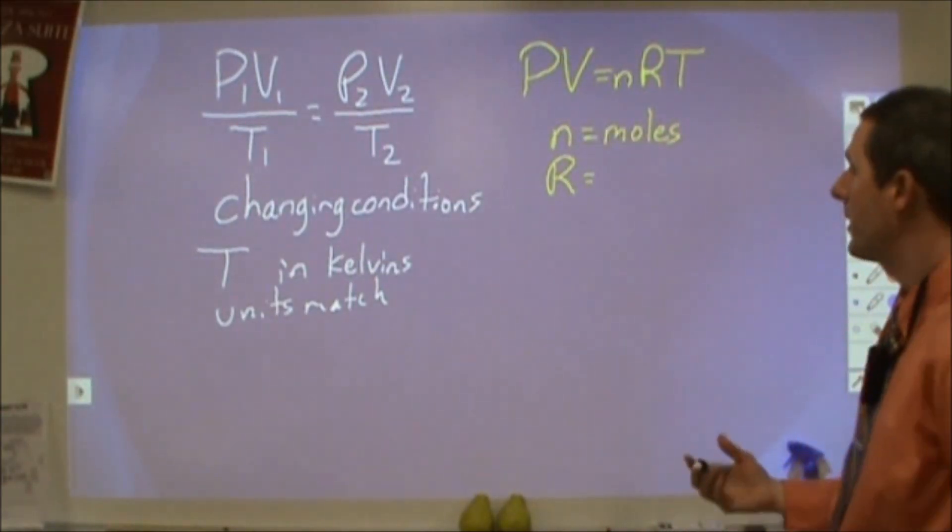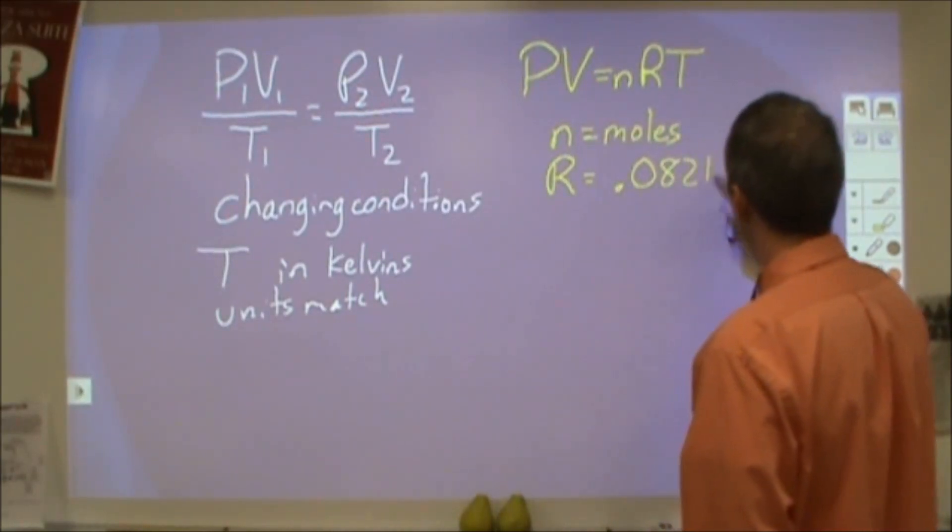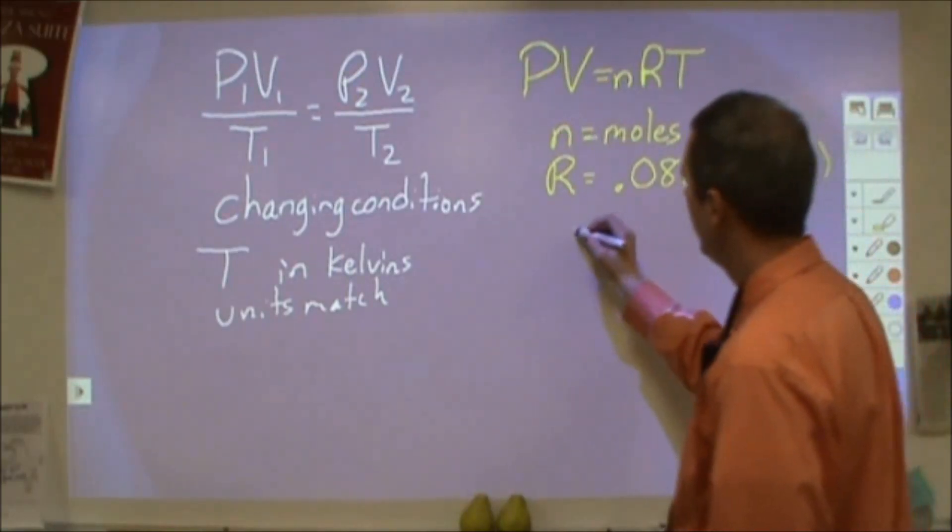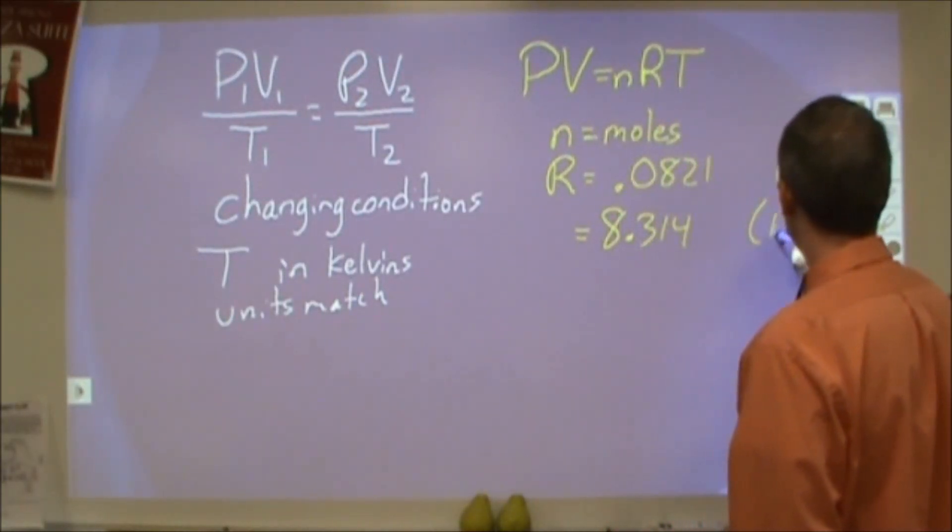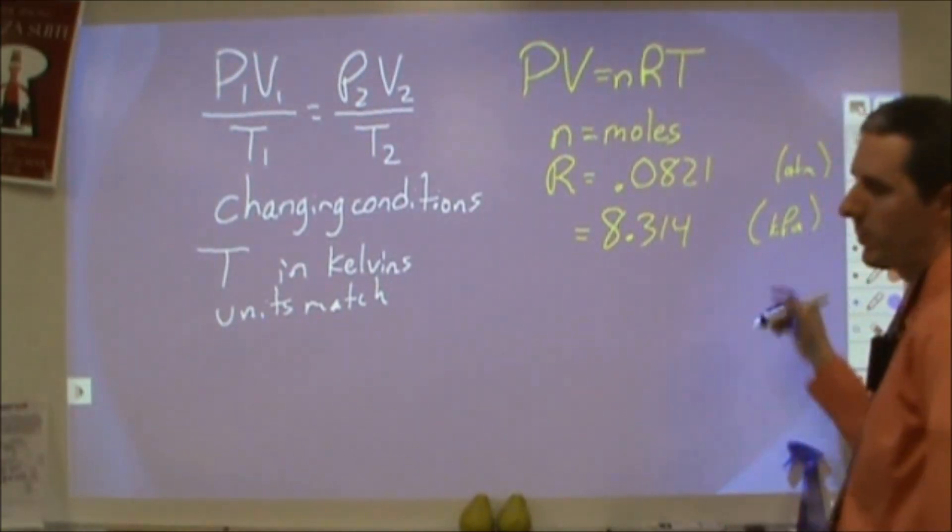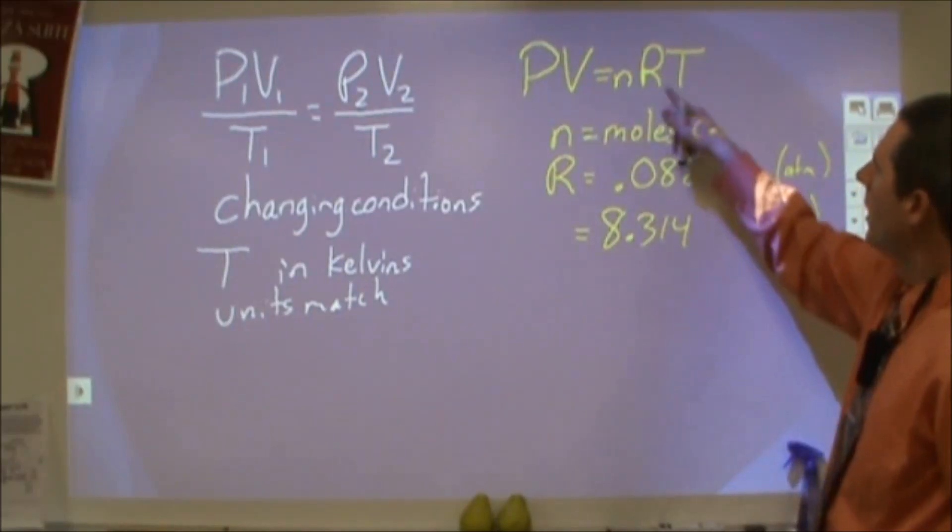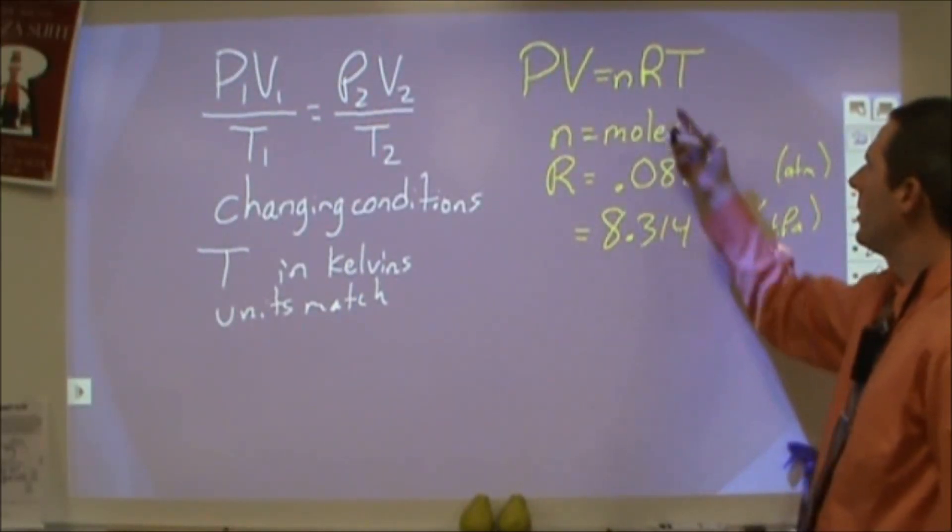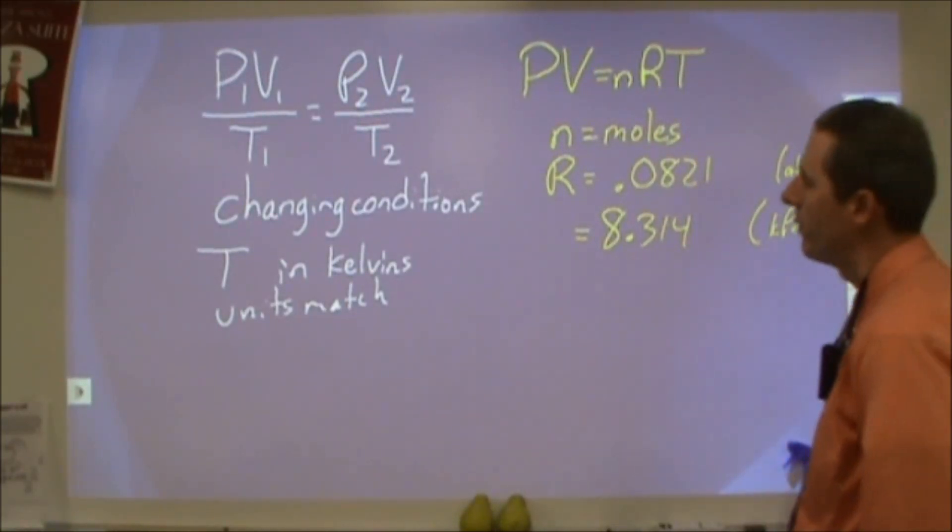And then we also have a gas constant. Now, I use two of the gas constants. There are more. But I use 0.0821. This is going to be what you use when your pressure is in atmospheres. The other one is 8.314. That's what you're going to use when your pressure is in kilopascals. This one is a little more physics based. And so if you go on and do some other things with higher things in chemistry, and you see RT for an energy calculation, you're going to be using the 8.314 for that.